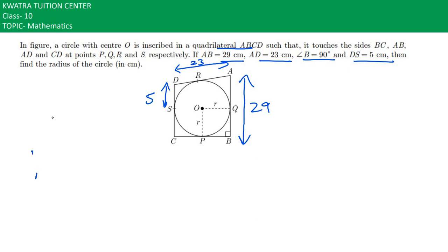If we look here, DS is given as 5. What does this mean? DR is also 5. Why? Because if we have an external point D and tangents are being drawn from that point, their length is equal to each other. So DS is 5, then DR is also 5.